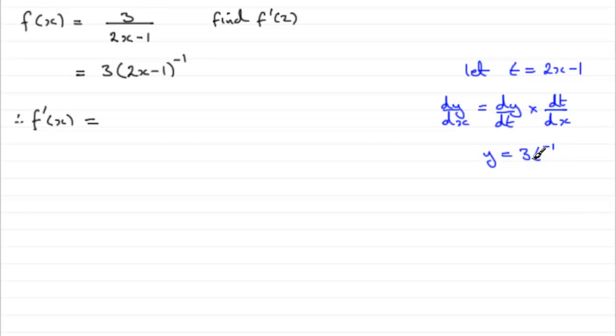So if we were to differentiate this, we would have minus 3t to the minus 2. Minus 3t, but t is the 2x minus 1, so 2x minus 1 to the power minus 2.